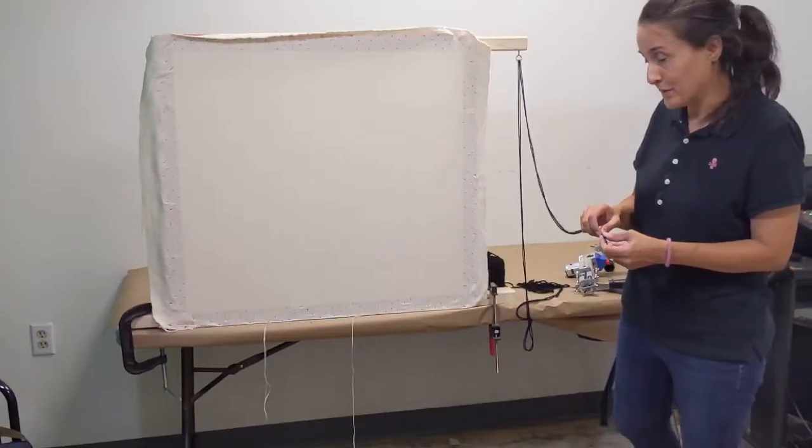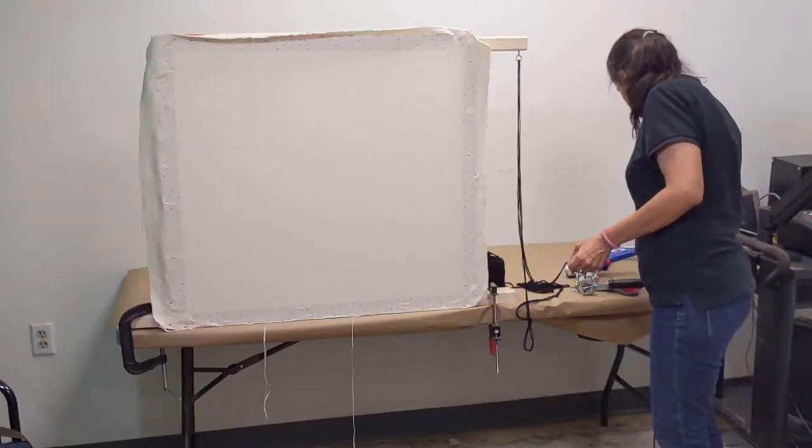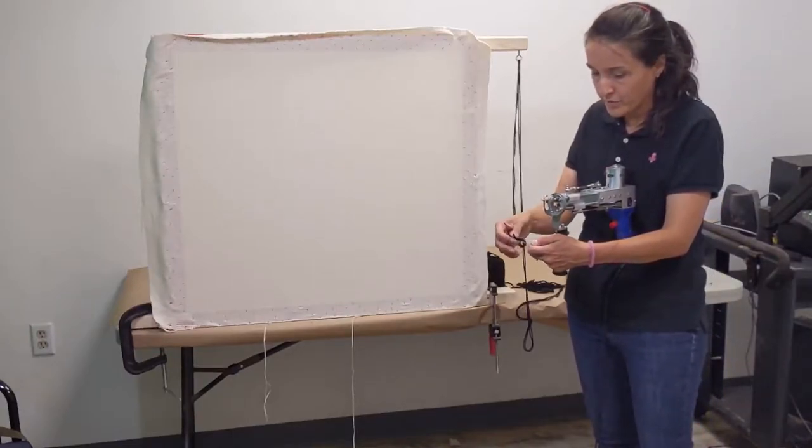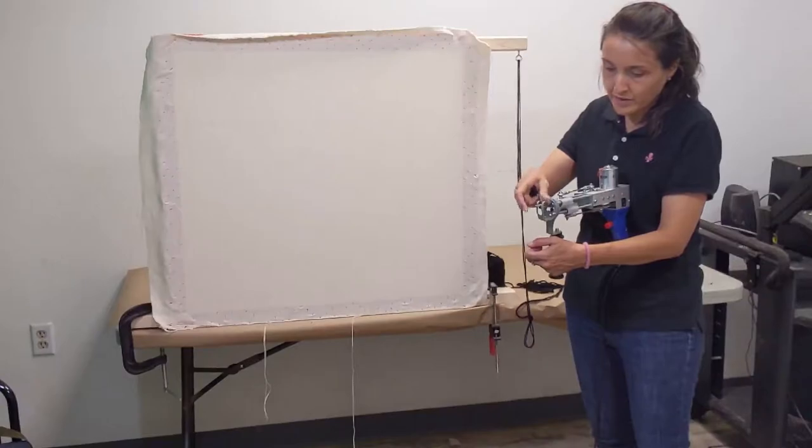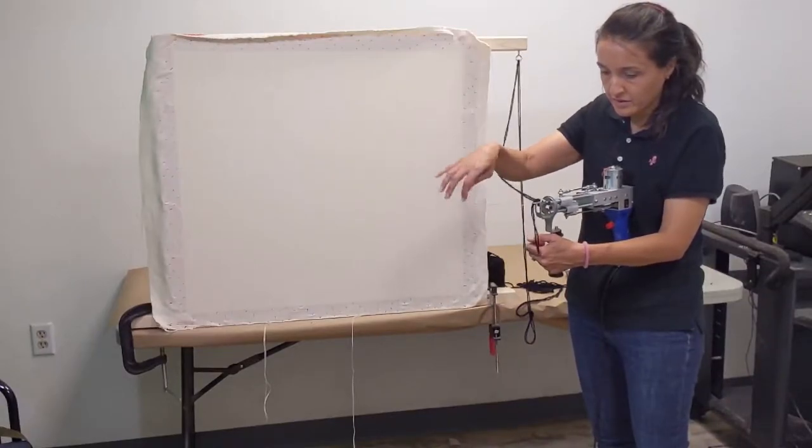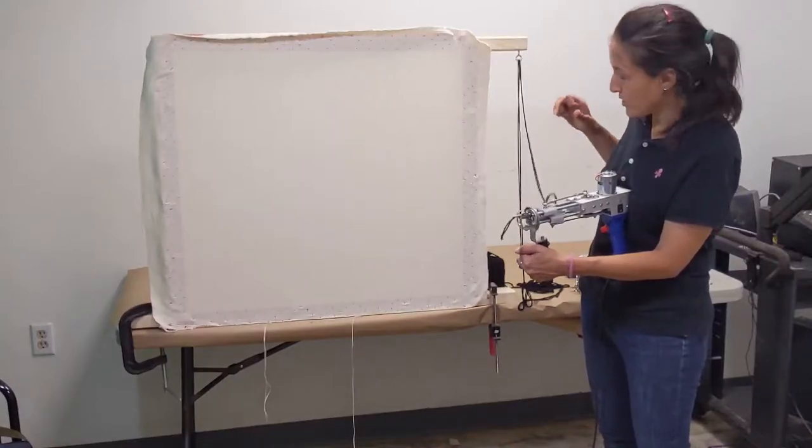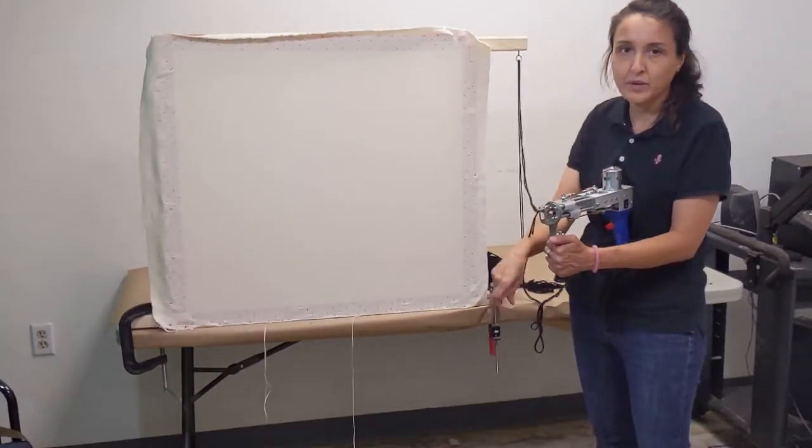Let's thread the loop pile gun first. First, I feed the yarn through the middle wire, and then through the needle of the gun. And you only need a little bit of yarn coming out the end of it. The rest is going to be wasted and cut off.